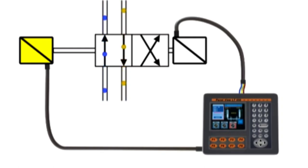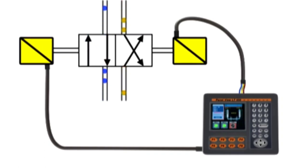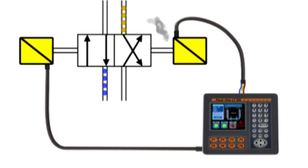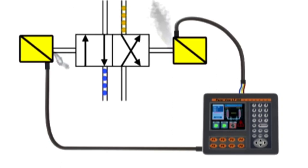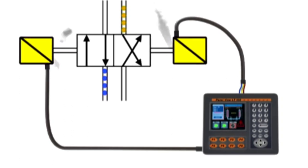If both solenoids are energized at the same time, the solenoids will work against each other and may cause the spool to become stuck, electrical burnout of the solenoid, or an overload of inrush current to the circuit, any of which will cause severe damage to the system or valve.